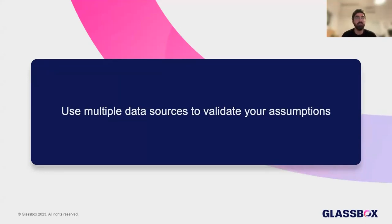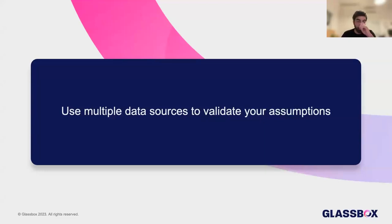The next key takeaway is about using multiple data sources to validate your assumptions. There are multiple types of data: feedback data, customer experience data tracked by systems like Glassbox, technical issues like slow-responding web pages, and user interview data. There is direct data and indirect data — meaning that you infer it. Every type of data point gives a different perspective and a different type of hint to a problem or opportunity that a product manager can exploit. Using all those different types of data together enhances the product manager's ability to understand the needs of their users in a holistic manner.